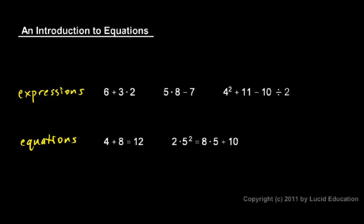Just like an English statement, it can be either true or false. In this case both of these statements are true: 4 plus 8 is equal to 12, and 2 times 5 squared is equal to 8 times 5 plus 10. An equation tells us that one thing is equal to another. So an equation always has an equal sign in it.